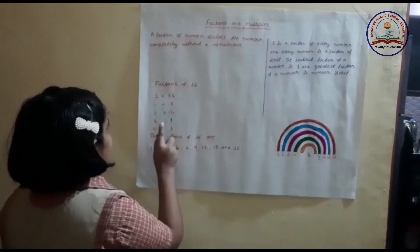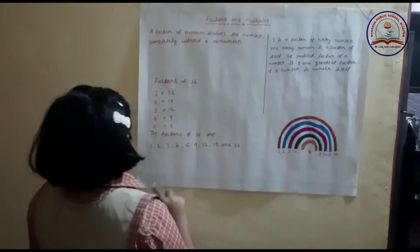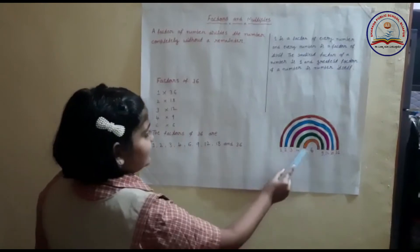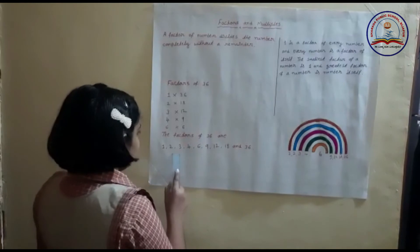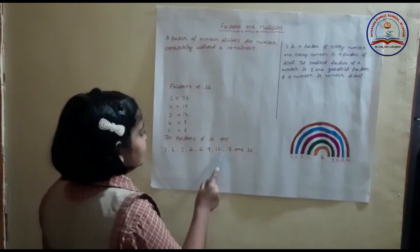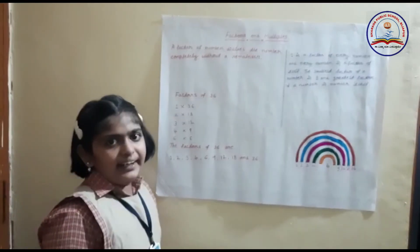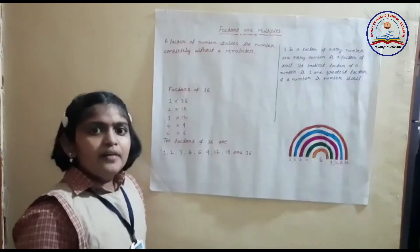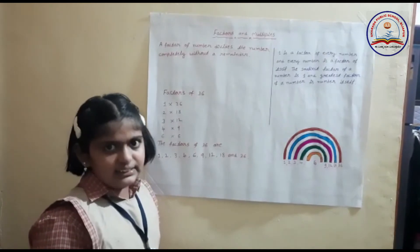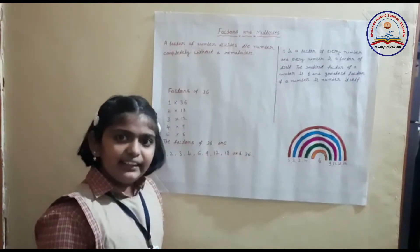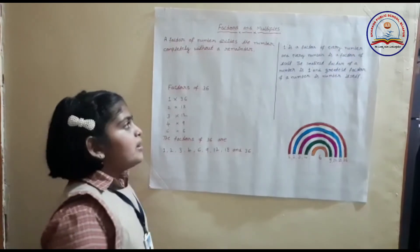Factors of 36: 1 × 36, 2 × 18, 3 × 12, 4 × 9, 6 × 6. The factors of 36 are 1, 2, 3, 4, 6, 9, 12, 18 and 36. 1 is a factor of every number and every number is a factor of itself. The smallest factor of a number is 1 and the greatest factor of a number is the number itself. Thank you.